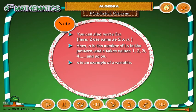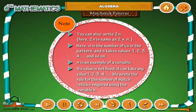N is an example of a variable. Its value is not fixed. It can take any value: 1, 2, 3, 4 and so on. We wrote the rule for the number of matchsticks required using the variable N.